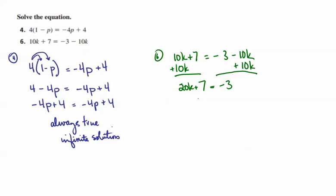At this point, subtract 7 on both sides, and I have 20k is equal to negative 10. Divide by 20, and k is equal to negative 1 half. Since we started out without fractions or decimals, that could be negative 0.5 as well. So here's an example of an equation with variables on both sides where we end up with one unique solution.